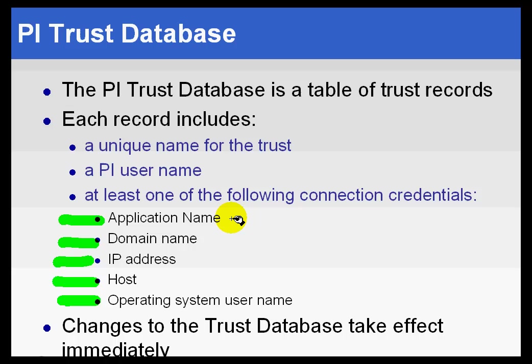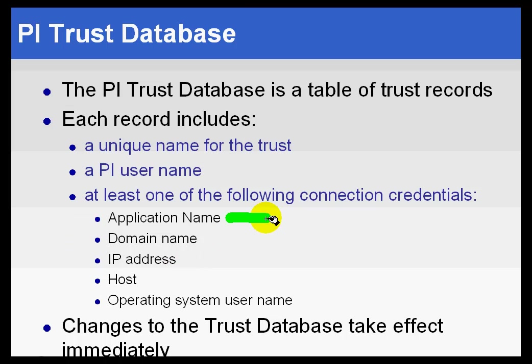Using the bouncer analogy: if somebody said let anybody in with a tux, that's somewhat restrictive. But if you say let anybody in with a tux who's driving a Maserati, that's a lot more restrictive. So the more connection criteria you specify, the more restrictive the trust will be — just like specifying both an application name and an IP address is more restrictive than specifying the application name alone.